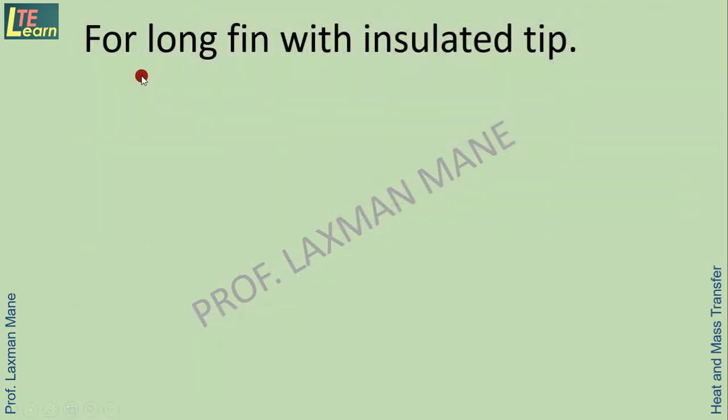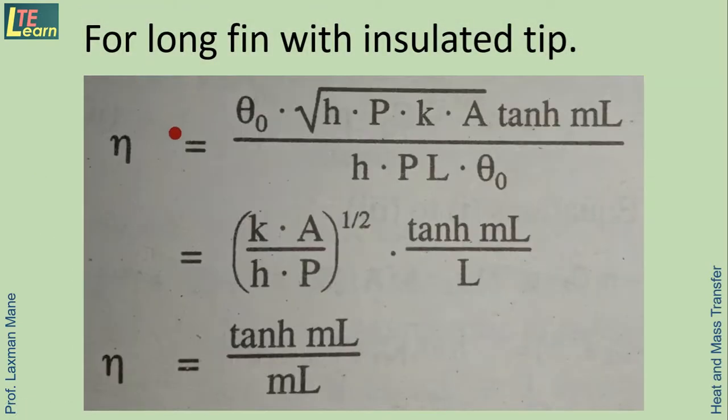So for long fin with insulated tip, we can have at the numerator this expression. Now in this we can have cancellation of the term θ_0 from numerator and denominator. Also h and P, these two terms at denominator and numerator will get cancelled. Remaining will be at the denominator square root of k upon h·P times tanh(mL) divided by L.